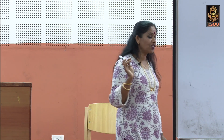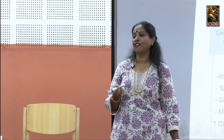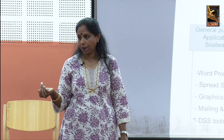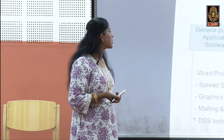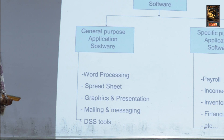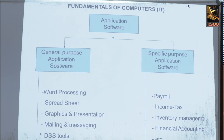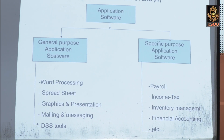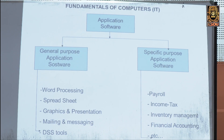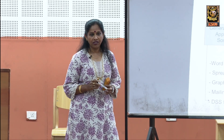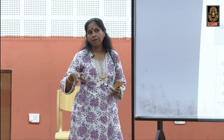Examples of general purpose software include Word, Excel, PowerPoint, mailing, and messaging. Once you install Microsoft Office, you get all of these. Specific purpose — also called specialized purpose — software is designed for only one particular use. For example, Tally is used only for accounting, inventory, financial, and income tax purposes. You cannot use Tally for writing a letter.